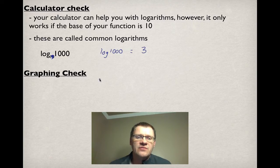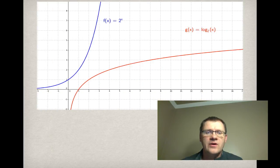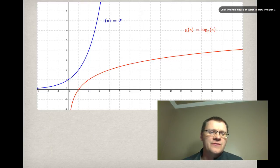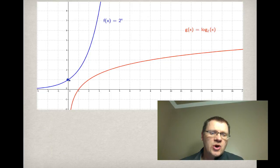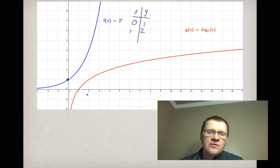We're going to do a little graphing check as well. If a logarithmic function is the inverse of an exponential function, then it should follow some of the same characteristics that other inverse functions have. I've graphed the blue function, which is f(x) equals 2 to the x — this should look familiar. It has a y-intercept of 0 comma 1. Making a table of values: when x equals 0, y equals 1; when x equals 1, y equals 2; when x equals 2, y equals 4, and so on.